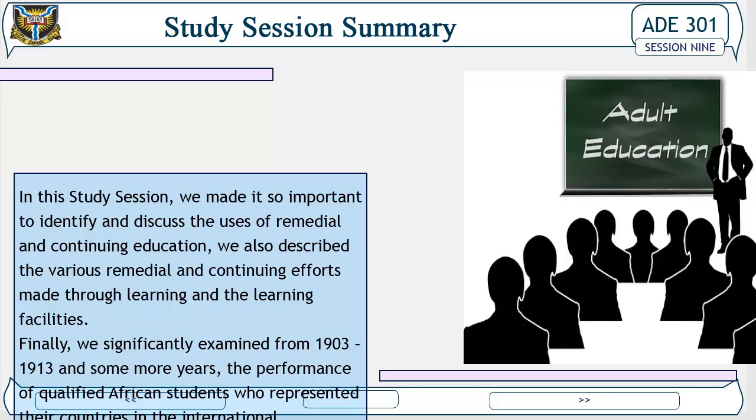In this study session, we identified and discussed the uses of remedial and continuing education. We also described the various remedial and continuing efforts made through learning and the learning facilities. Finally, we significantly examined from 1903 to 1913, and some more years, the performance of qualified African students who represented their countries in the international examination. End of study session nine. Thanks for listening.